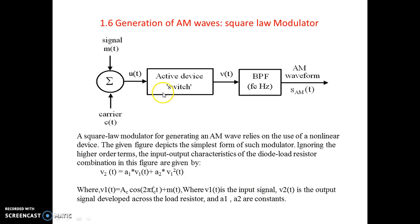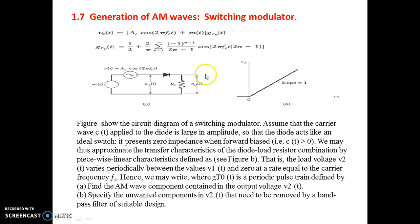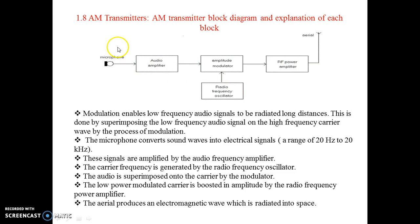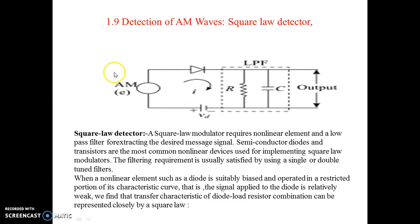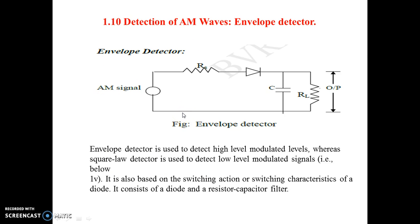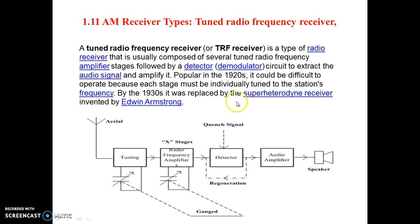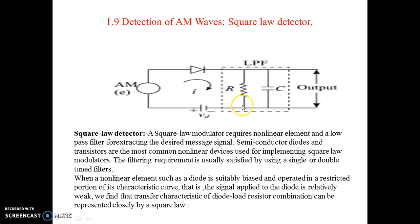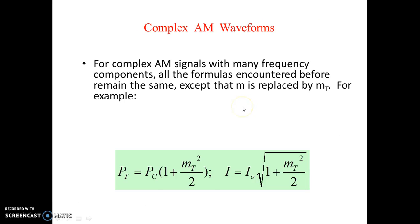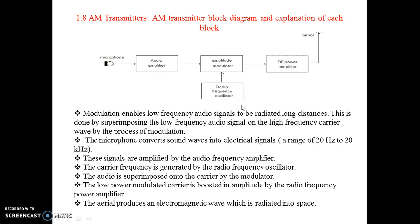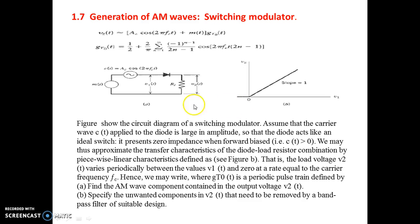AM waves can be generated using a square law modulator or a switching modulator. They can be detected using a square law detector or an envelope detector. In the next class we will be seeing in detail how the AM signal is generated and how it is demodulated.